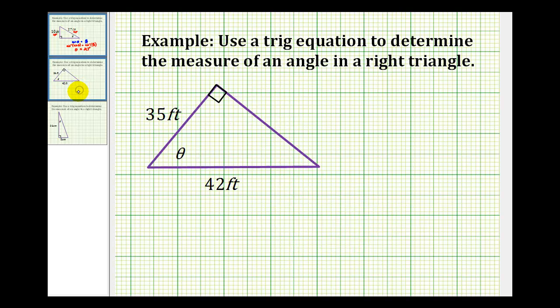Let's take a look at another example. If this is our angle theta, this side here would be the opposite side. The side opposite the right angle would be the hypotenuse. And this side here would be the adjacent side to angle theta.